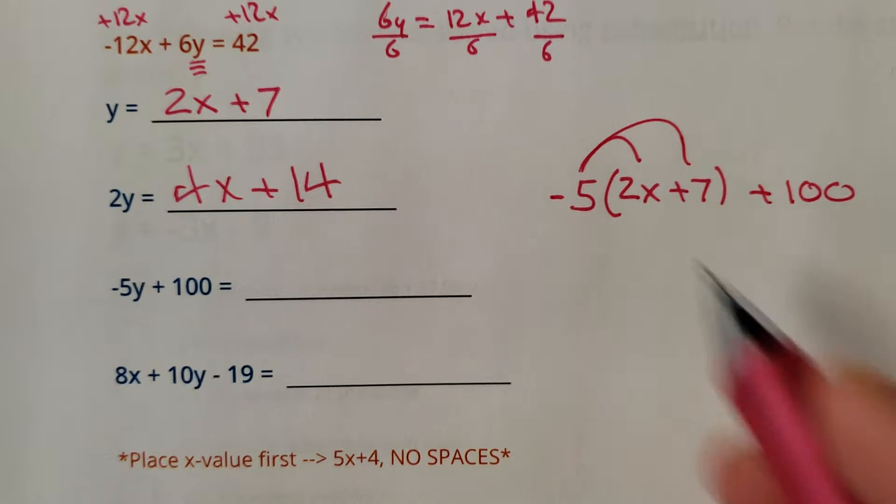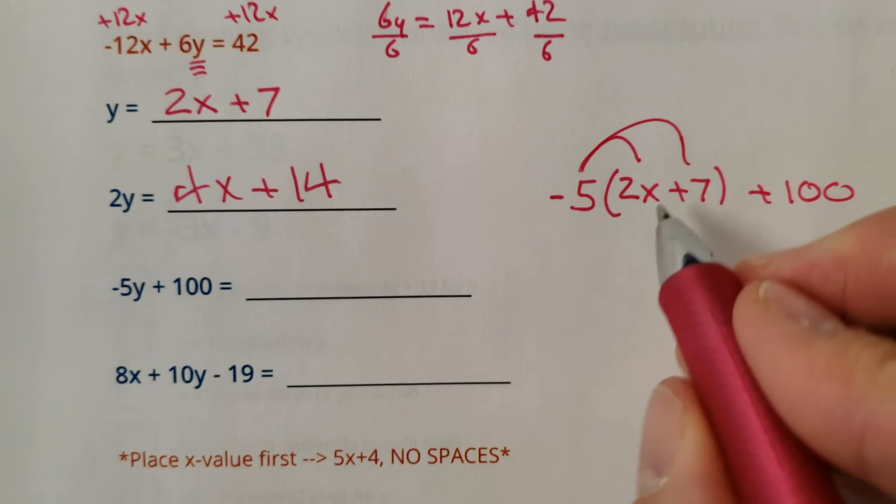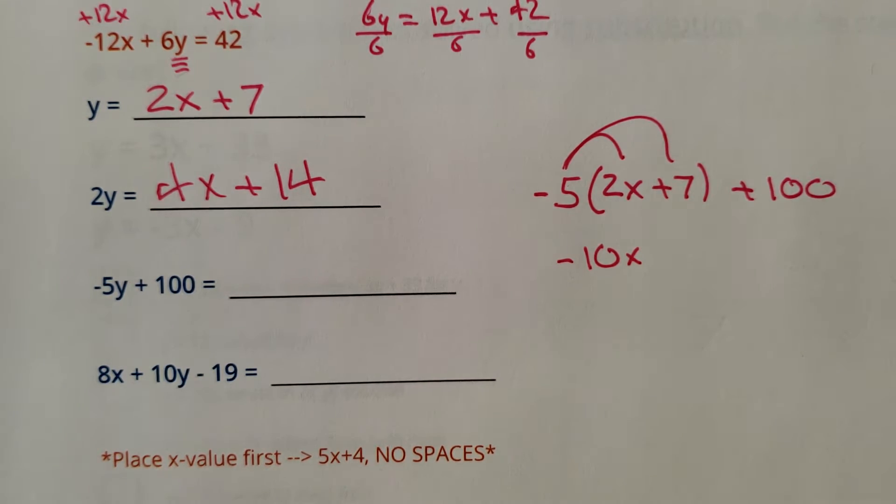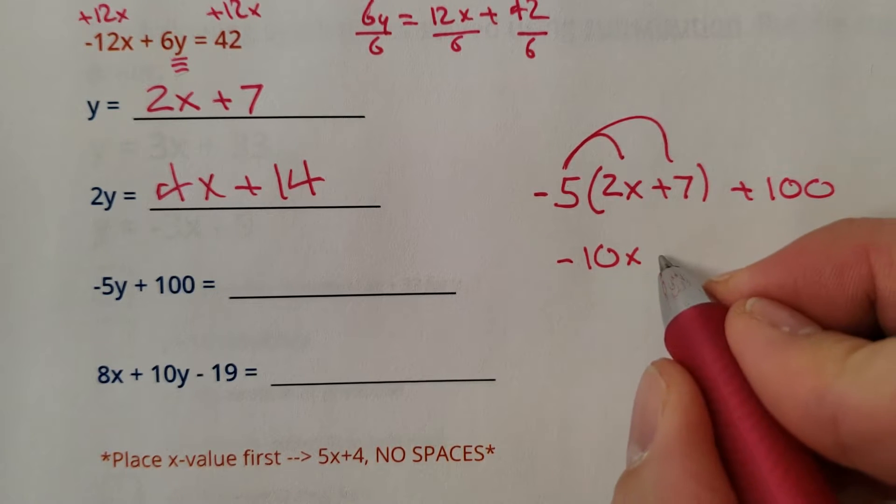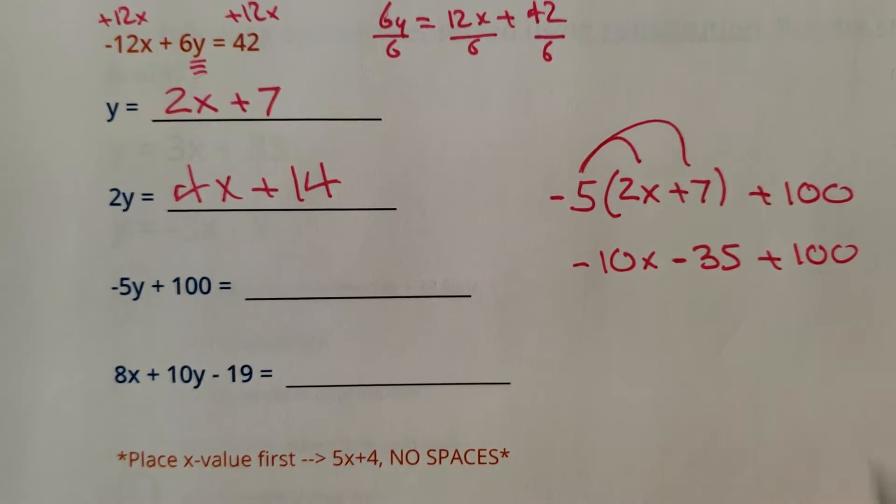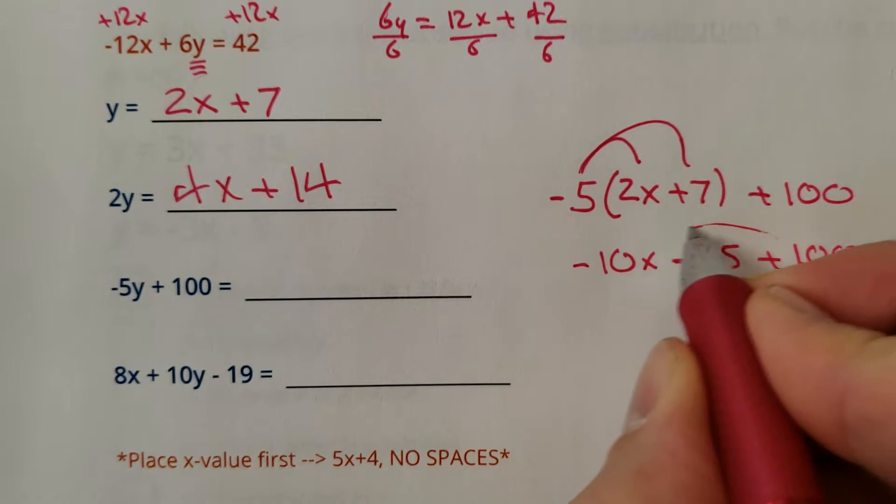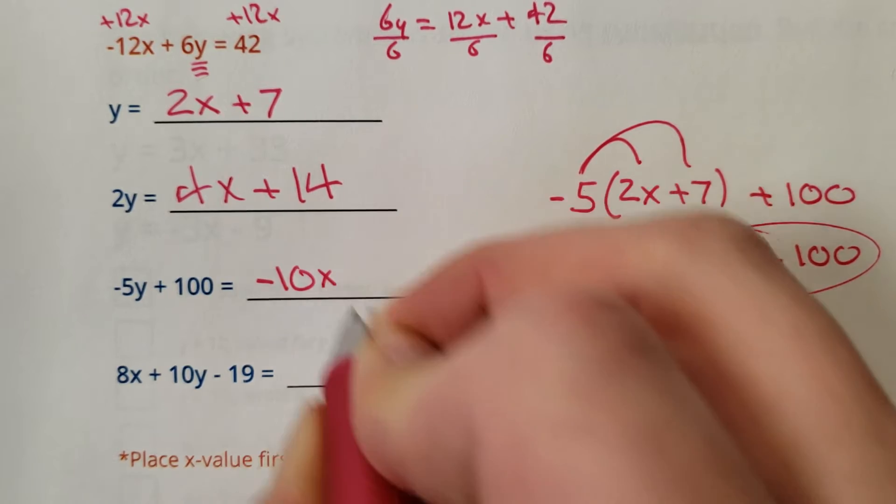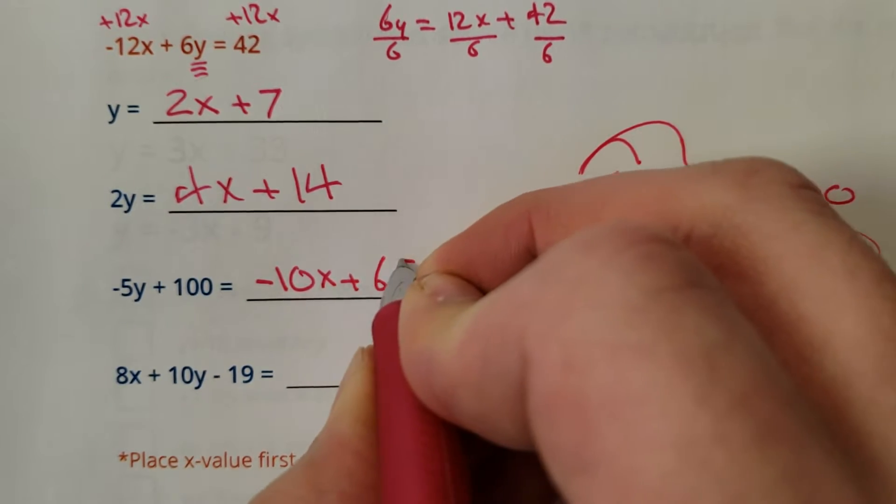Some people could do this with mental math. Negative 5 times 2 would be a negative 10x. Negative 5 times a negative 7 would be a negative 35, I believe, plus 100. So the only thing you'd really have to simplify is the numerical value. So we'd go negative 10x, and that's going to be plus 65.